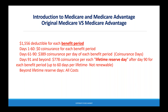The $1,556 deductible covers days one through 60, with zero co-insurance during that period. Days 61 through 90 carry $389 co-insurance per day. For lifetime reserve days — days 91 and beyond — there is $778 co-insurance per day, up to 60 lifetime reserve days total per lifetime. These are not renewable. Once a beneficiary has used all 60 lifetime reserve days, they are responsible for all costs beyond that point.